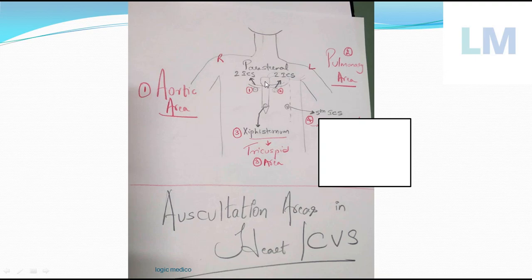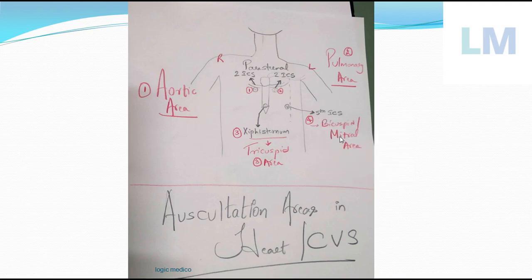The last area is in the mid-clavicular line, just below the nipple. The nipple is not a constant position, so we take the fifth intercostal space. To reach it: from the angle of Louis, that's the second costal cartilage, then alternate fingers - second, space of third, space of fourth, space of fifth rib - ribs are oblique, then fifth intercostal space. Just within the mid-clavicular line in the fifth intercostal space is the bicuspid area or mitral area, where you can hear the closure of the bicuspid valves between the left chambers of the heart much more clearly.